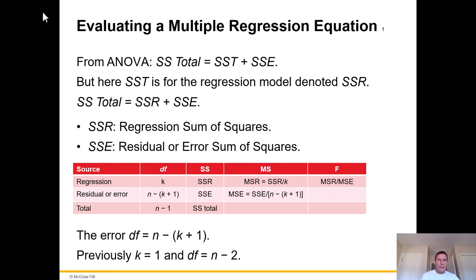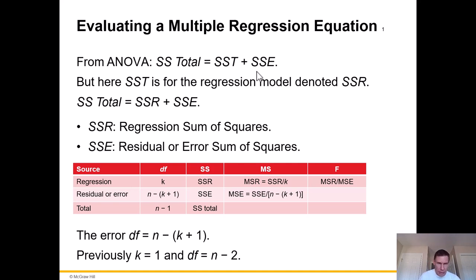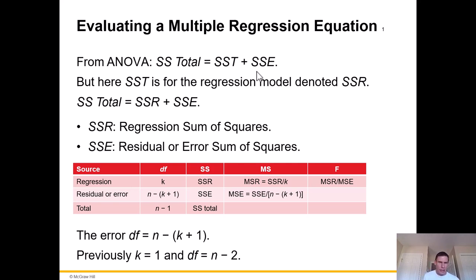From ANOVA we know the sum of squares total equals SSR plus SSE. Here, the regression component is denoted SSR. Think of it as: the regression sum of squares is what we can explain, but there's also an error term because we don't know any of this is actually true. This also accounts for any systematic variances as well.